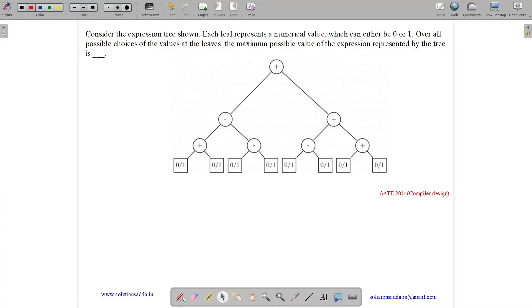This question belongs to compiler design subject and was asked in GATE 2014, set 2. The question states: Consider the expression tree shown. Each leaf represents a numerical value which can either be 0 or 1. Over all possible values of the leaves, the maximum possible value of the expression represented by the tree is.